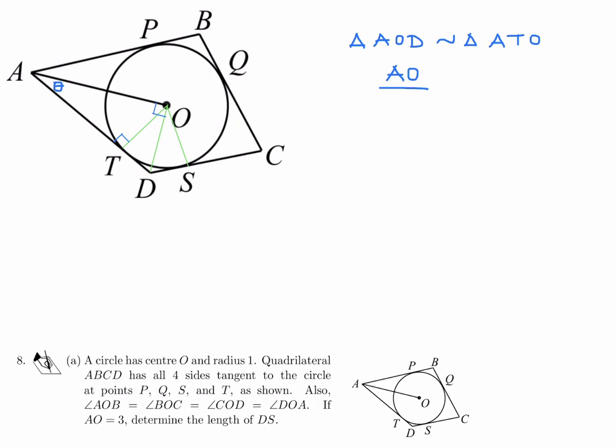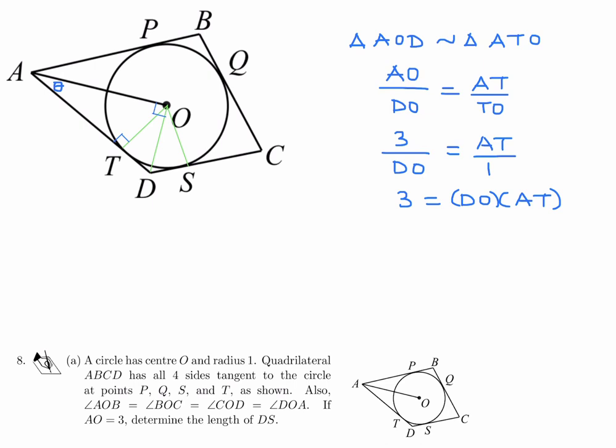AO over DO will be the same as AT over TO. AO, they told me in the question, is 3. DO I don't know yet, and AT I also don't know. But TO I know — TO is just the radius of the circle, which is 1. So cross multiplying, 3 is equal to DO times AT.